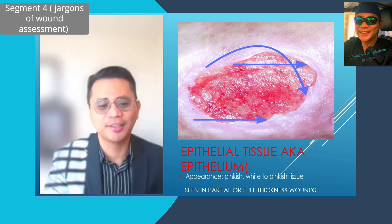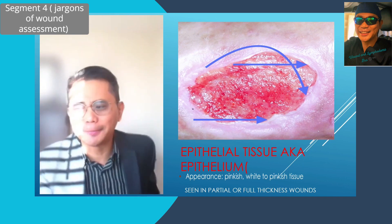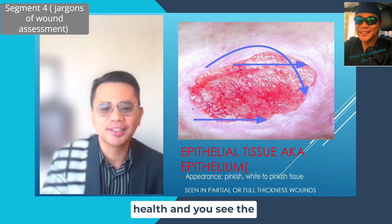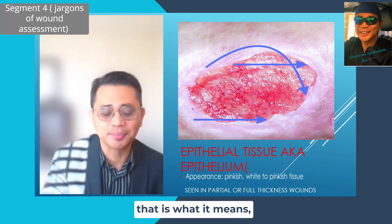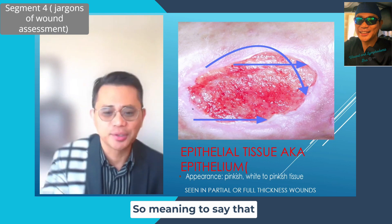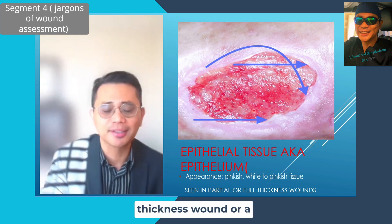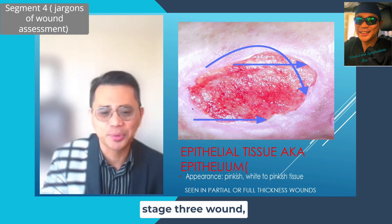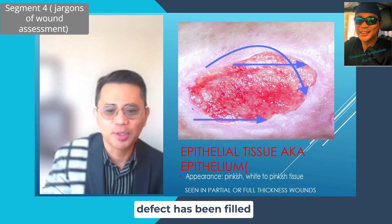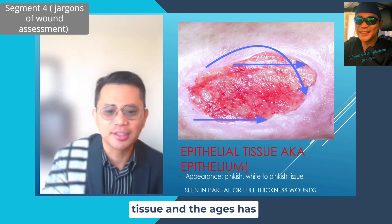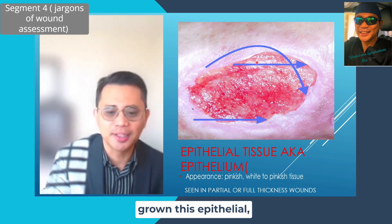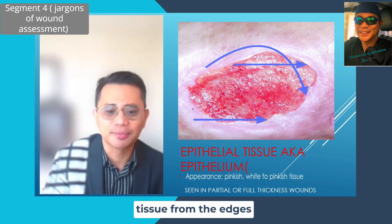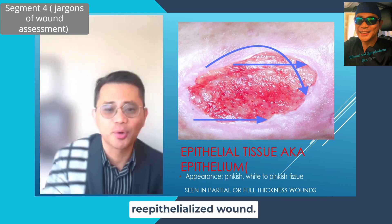If you work in home health and you see the word 're-epithelialized,' that means that if this is a full thickness wound or a stage 3 wound, the depth or defect has been filled with granulation tissue and the edges have grown epithelial tissue that migrated and resurfaced the wound. That is what we call a re-epithelialized wound.